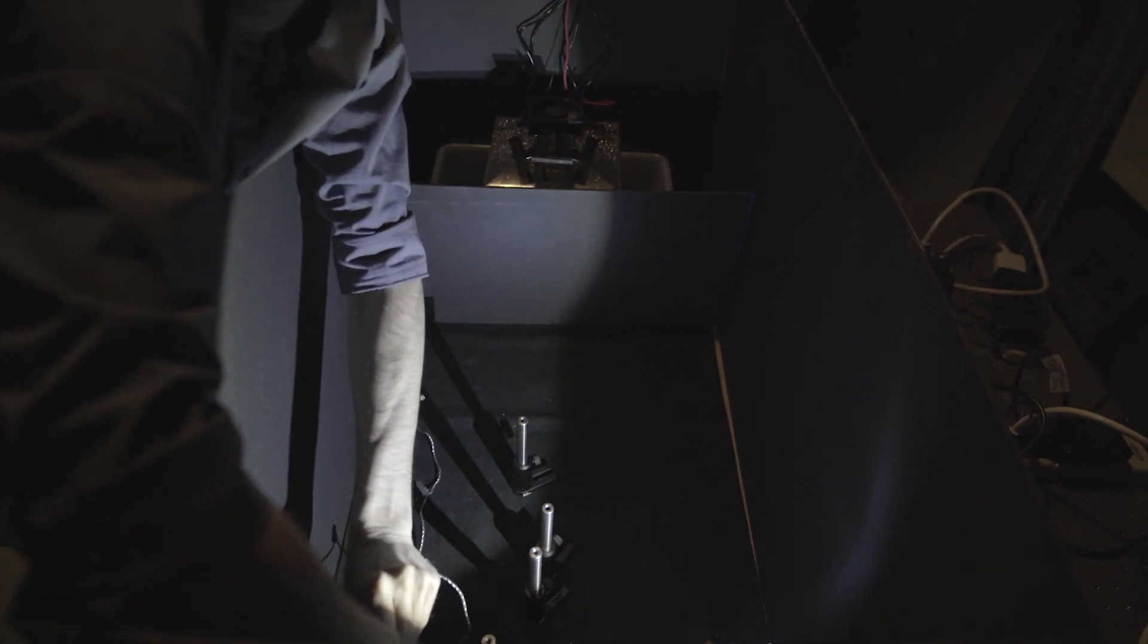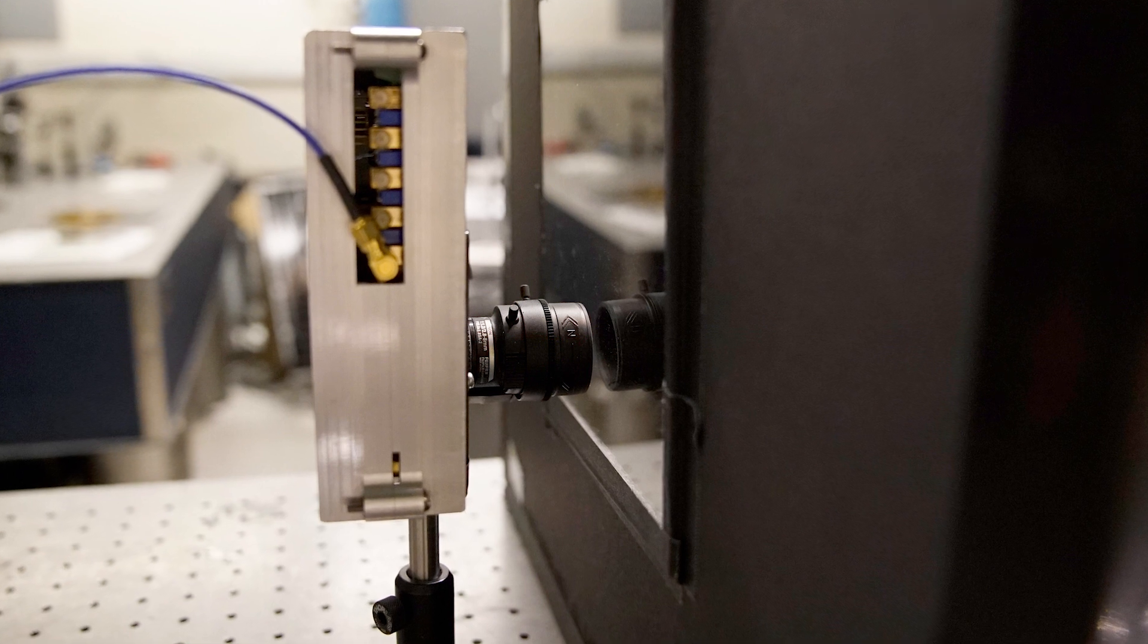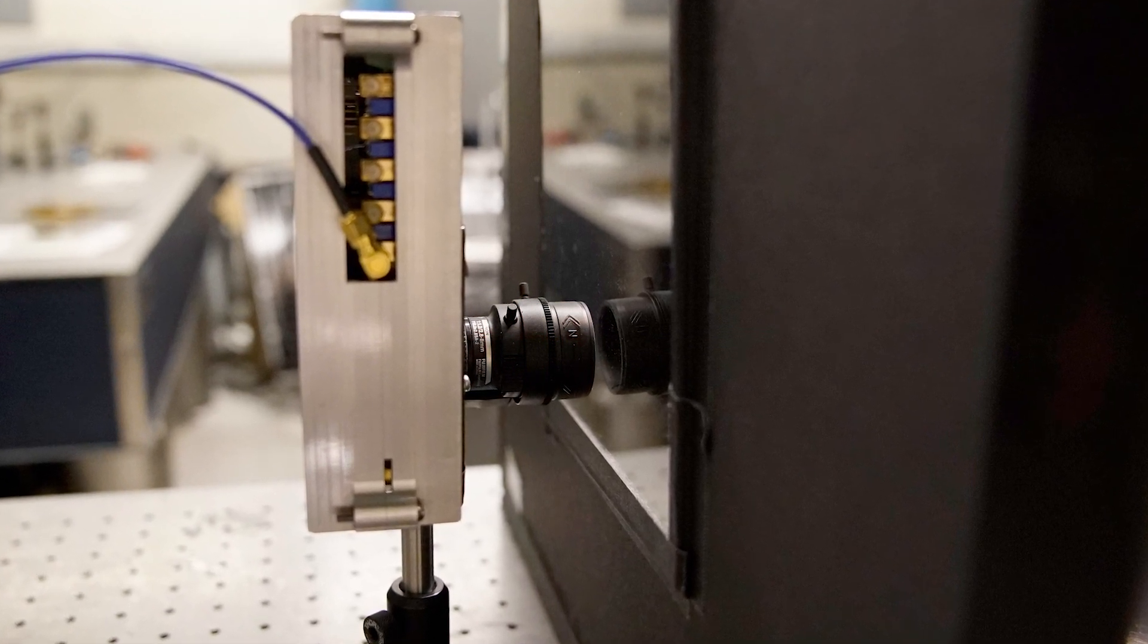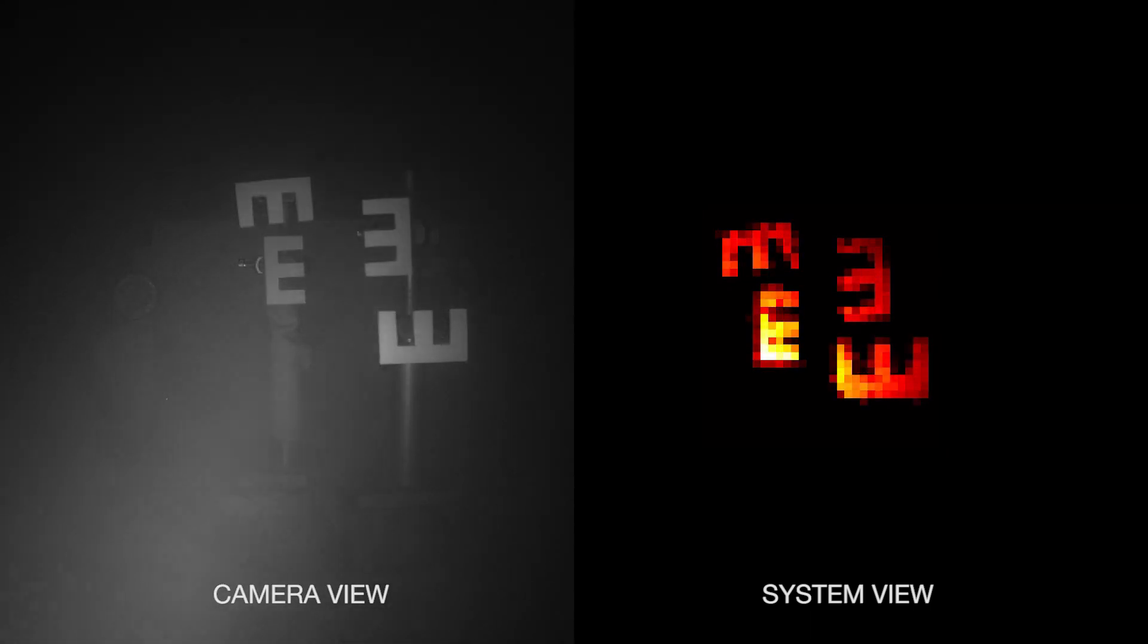To test their system, the team placed objects in an enclosed box approximately one meter long, and then gradually filled the space with thick fog. Outside, pointing into the box, there is a laser which fires pulses of light into the foggy scene, and then a camera that measures the time it takes their reflections to return. What they found was their system was able to image objects even when they were indiscernible to the naked eye.